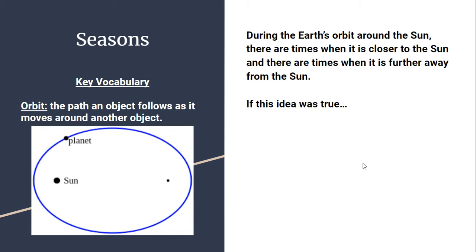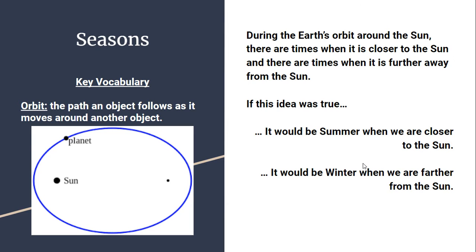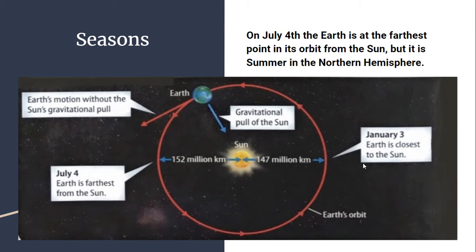So if the location in orbit caused the seasons, being closer to the Sun would mean summer, and being farther away would mean winter. But when we study this, we learn that's not true. The farthest we get from the Sun puts us 152 million kilometers away. If that's supposed to be the coldest point, we should be in winter — but we are 152 million kilometers away on July 4th. That's summer. That's hot. Yet if you're far from the Sun, it should be cold.